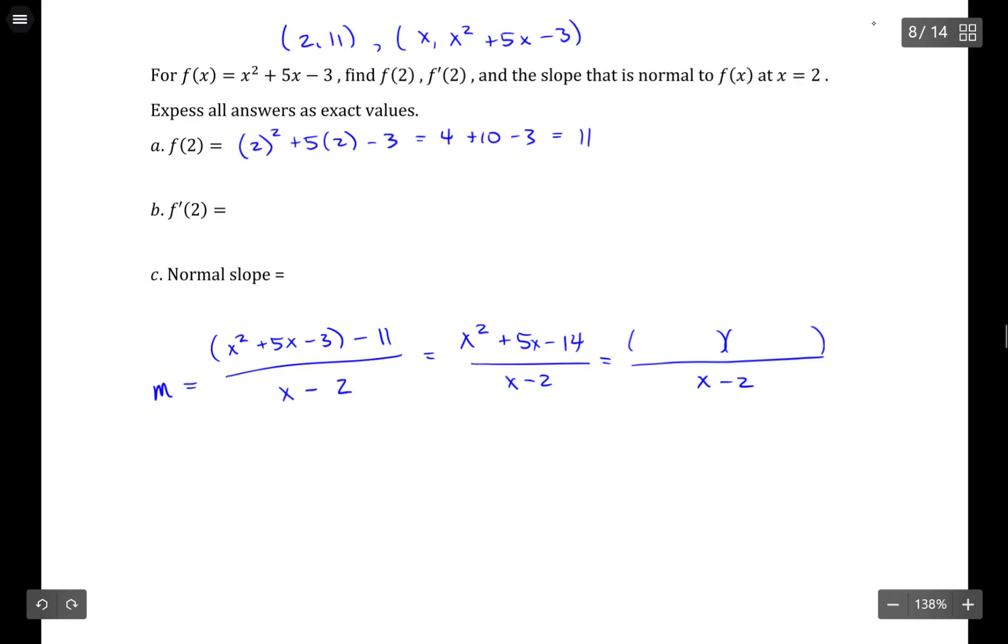So that means they have a shared factor. If you cancel out that shared factor, then you can get a function where you can plug in the value of interest. So the slope of the tangent line at 2 is going to be 2 plus 7, which is 9.